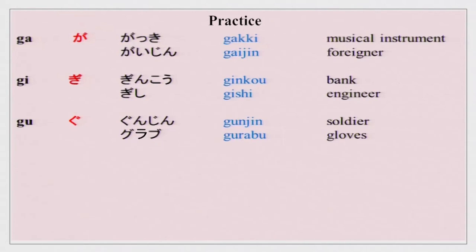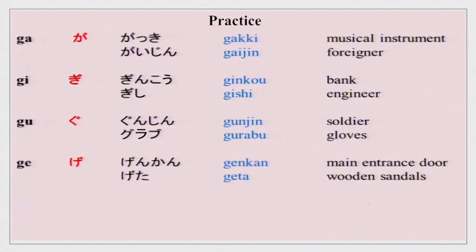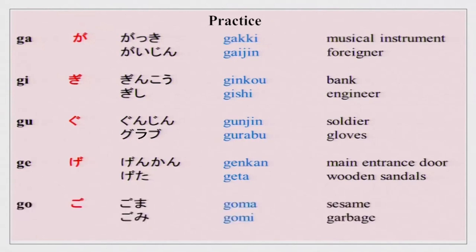Gu: gunjin is a soldier. Gurabu — gurabu for gloves. You will notice that gurabu is written in katakana because it is a foreign word. Ge: genkan is the main entrance of the house, the main door. Geta — geta is wooden sandals which the Japanese wear. Go: goma is sesame and gomi — gomi is garbage.